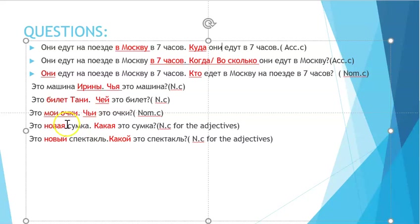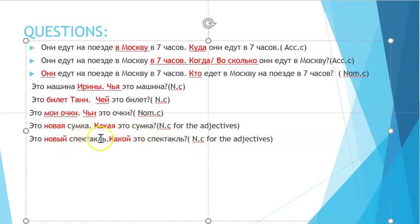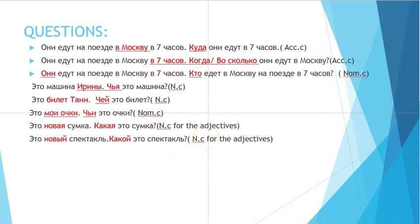For adjectives, you use 'какой' and must agree in gender. For a feminine noun it's 'какая', and for masculine — for example 'какой это спектакль?' — we agree with the masculine noun. The adjective is in the same case; this is the nominative question for adjectives. I hope the video was useful — please comment and subscribe, and thank you for watching!